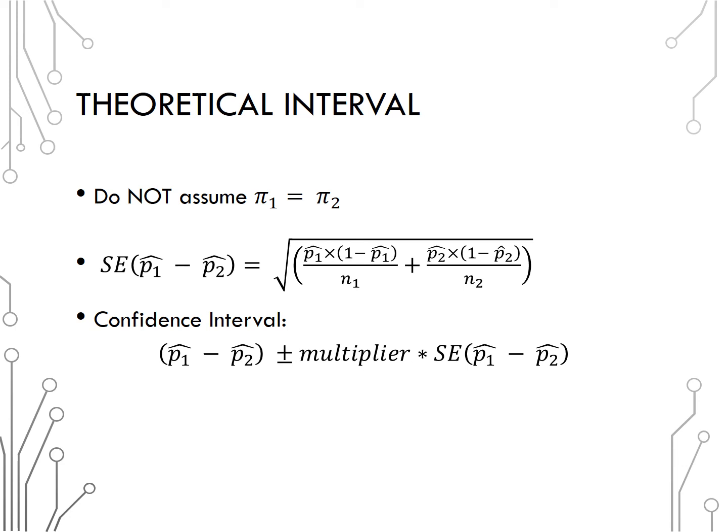Since we are back to the normal distribution, it is the same multipliers as in unit 1. A 90% interval would use 1.645, 95% would use 1.96, and 99% 2.576. Be sure when interpreting confidence intervals to include the order of subtraction, either by explicitly writing it in the interpretation or stating that one group is higher than the other.